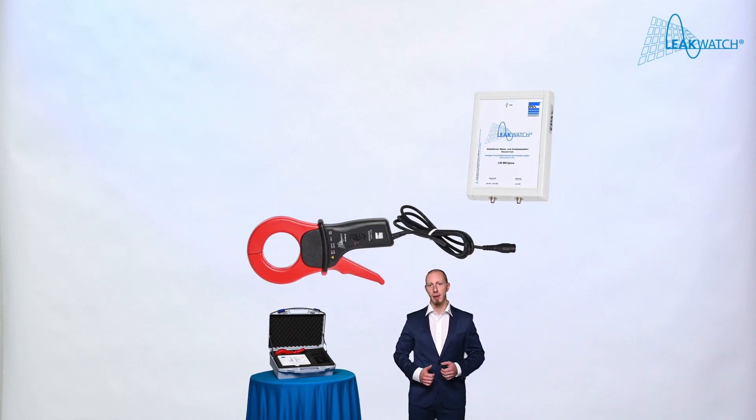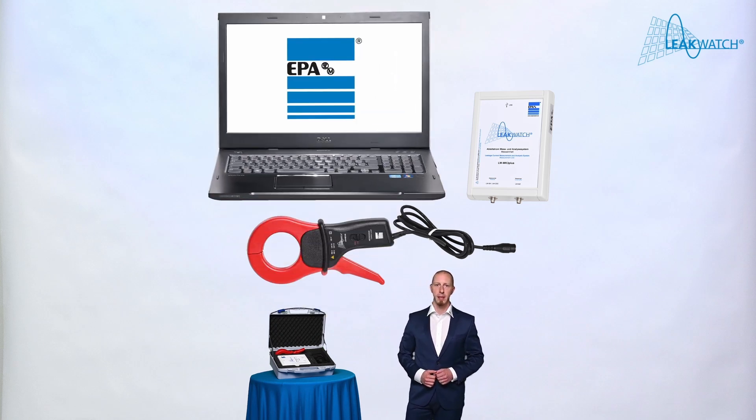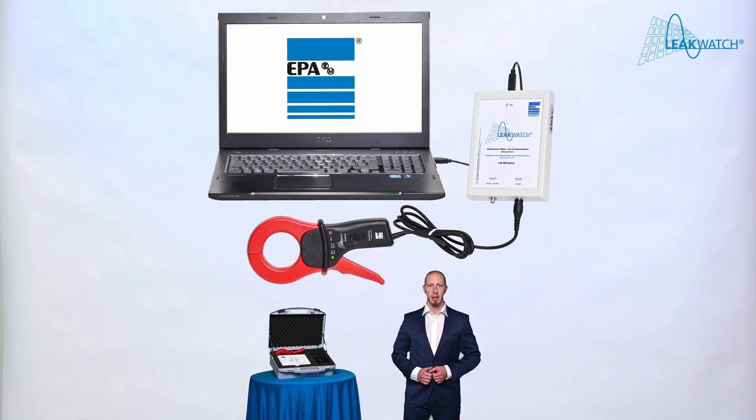The Leakwatch measuring and analyzer system consists of the measuring unit and the measuring transformer, in this case a measuring clamp. For evaluation and displaying the measured values, a PC or laptop with a Windows operating system is additionally required. The measuring clamp is connected to the laptop via a USB cable. The measuring clamp is placed around the outer conductors as described before.